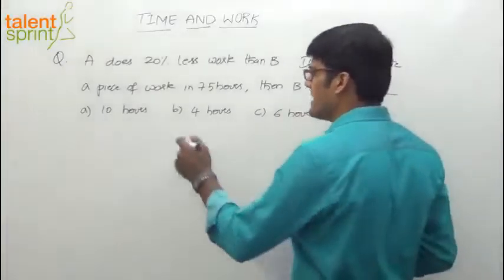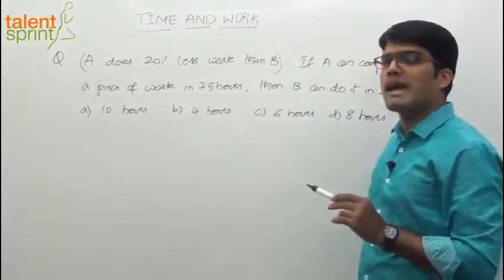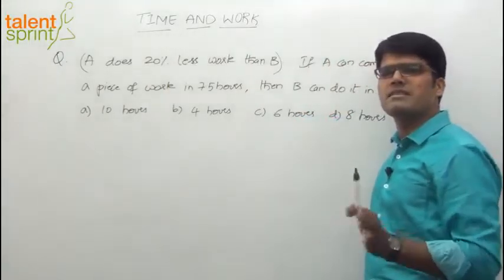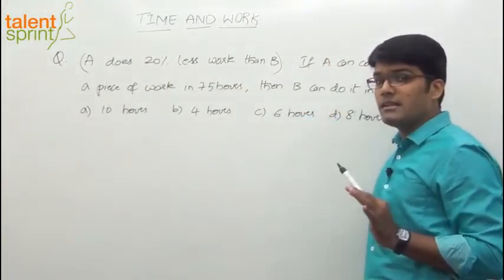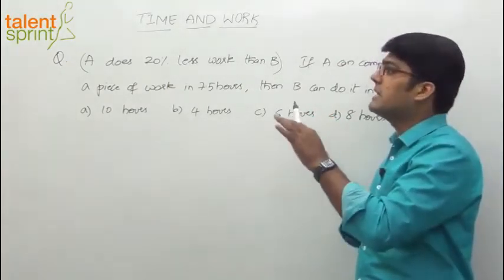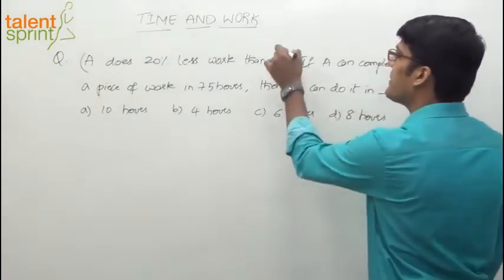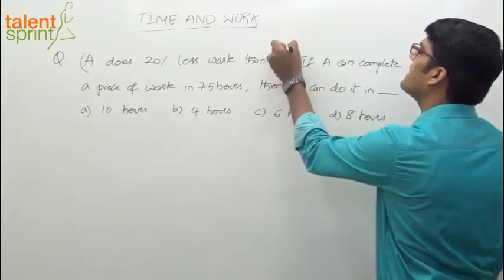What does it say? A does 20% less work than B. Now you need to understand this statement properly. As such it says that A does 20% less work than B. But something by default which should be taken for granted is A does 20% less work than B in a given time. This part is not given but you have to understand that in a given time.